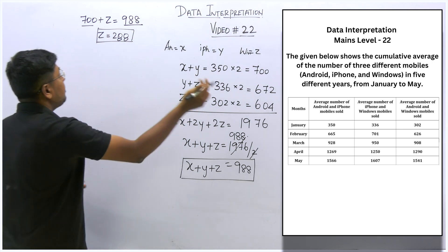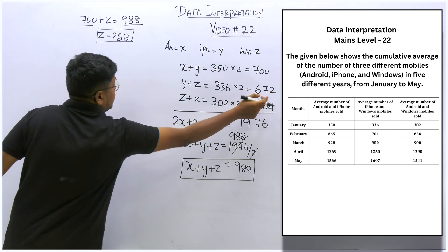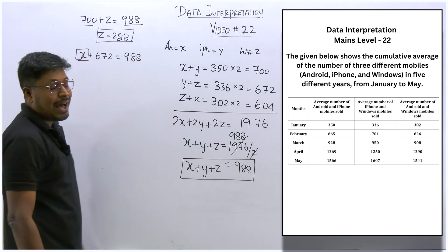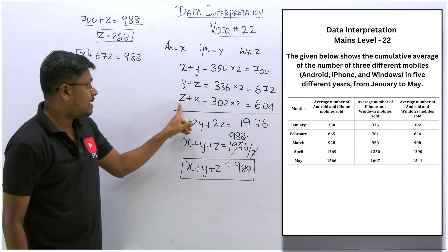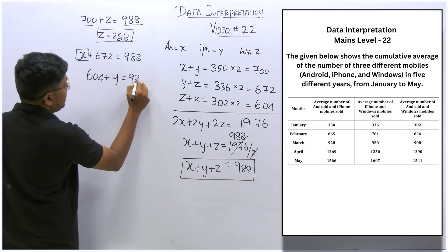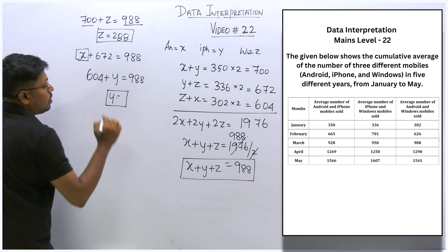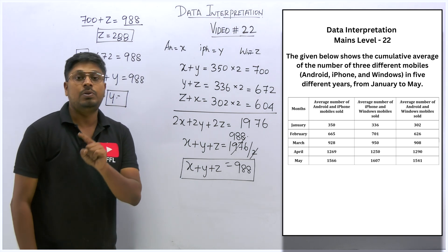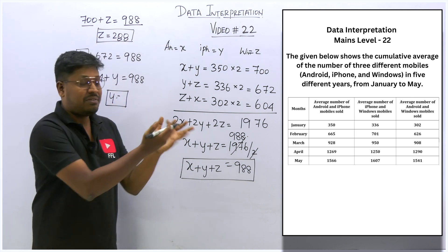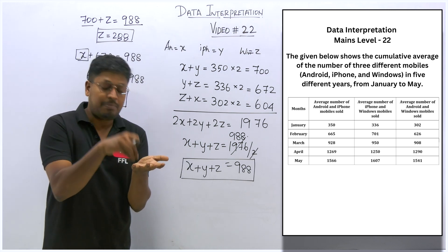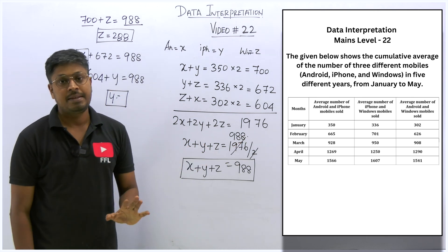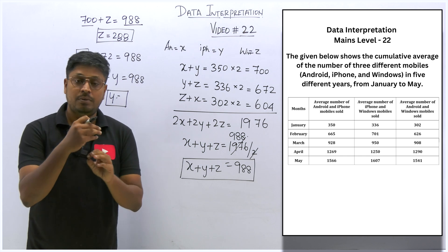Similarly, y+z equals 672, so x equals 988 minus 672, giving the total Android mobiles. And z+x equals 604, so y equals 988 minus 604, giving the total iPhones sold in January. Now we have the values of x, y, and z. After knowing all values, solving the questions is very simple. Initially it takes more time and you need to be fast with calculations.